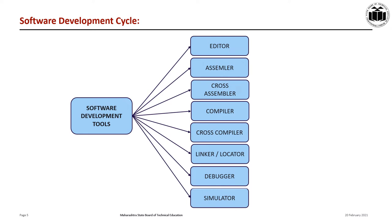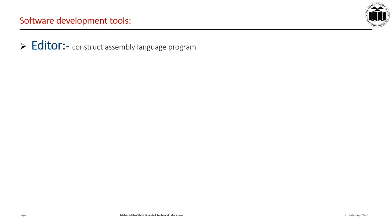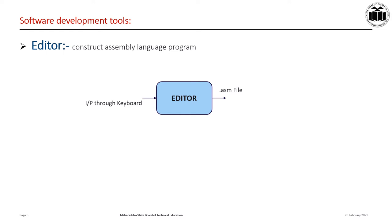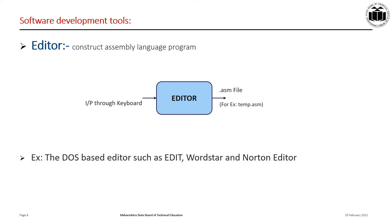An editor is a program which helps you to construct your assembly language program in the right format so that the assembler will translate it correctly to machine language. You can type your entire program through the keyboard using an editor. After typing the entire program, we have to save it. This form of program is called the source program and the extension name must be .asm or .src depending on which assembler is used. Examples of editors are DOS-based editors such as Edit, WordStar, and Norton Editor.